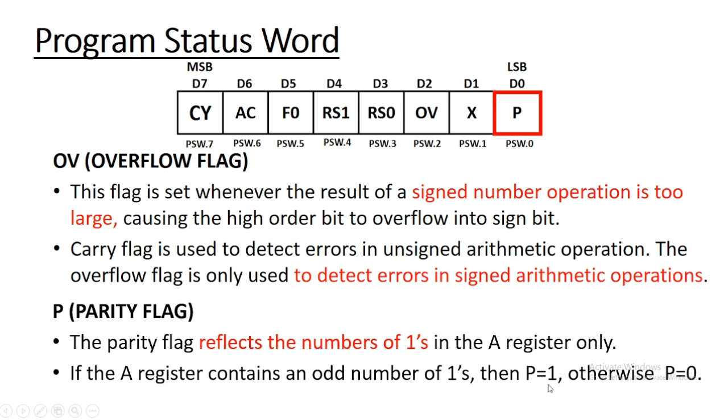If A register contains an odd number of 1s, then the parity flag is 1. Otherwise, if A register contains an even number of 1s, this P bit is 0.